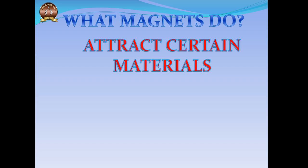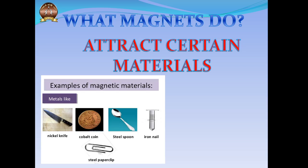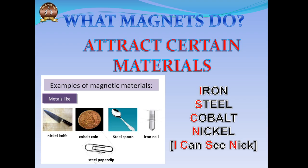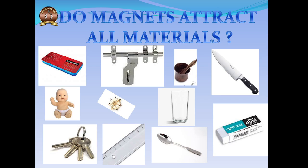Now, what do magnets do? Magnets can attract certain materials. Examples of magnetic materials, which we have already learned in Grade 5, are iron, nickel, steel, and cobalt. We have the mnemonic 'I Can See Nick' to help you remember this. So remember that not all metals, but only certain metals, are actually attracted towards magnets — which is why we can safely wear gold or silver and go through a metal detector.